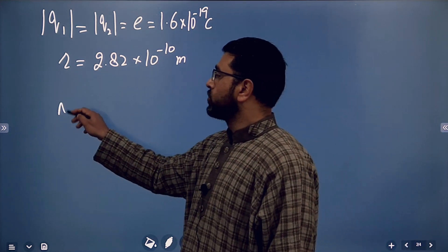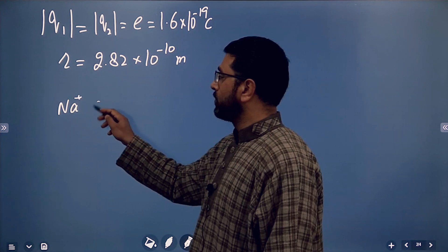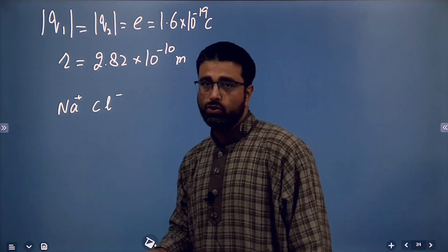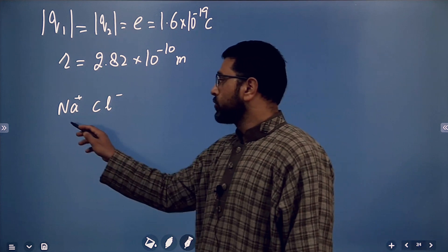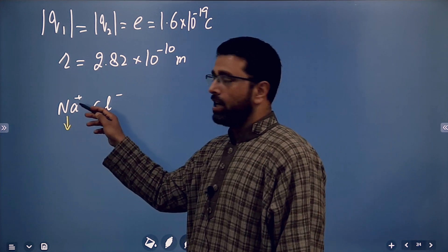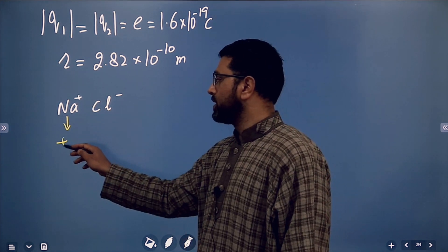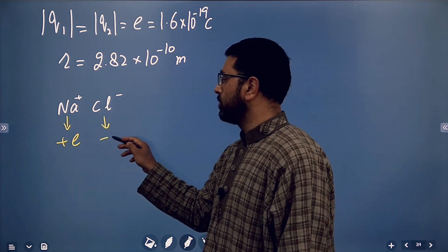So, we have sodium ion on one side and chlorine ion on the other side in the sodium chloride crystal. We know sodium has a charge of plus 1, which means plus e, and chlorine has a charge of minus e.